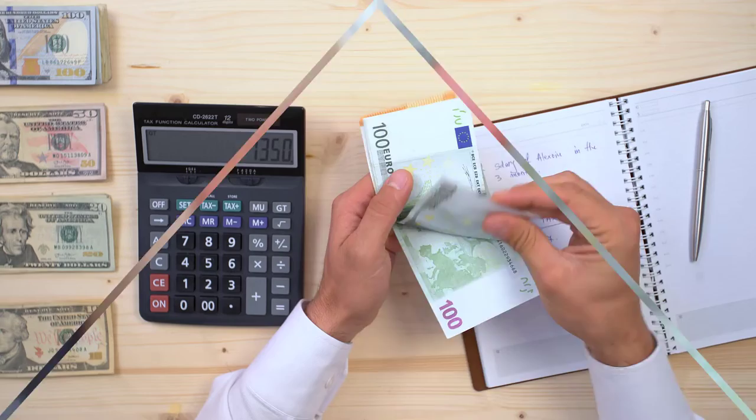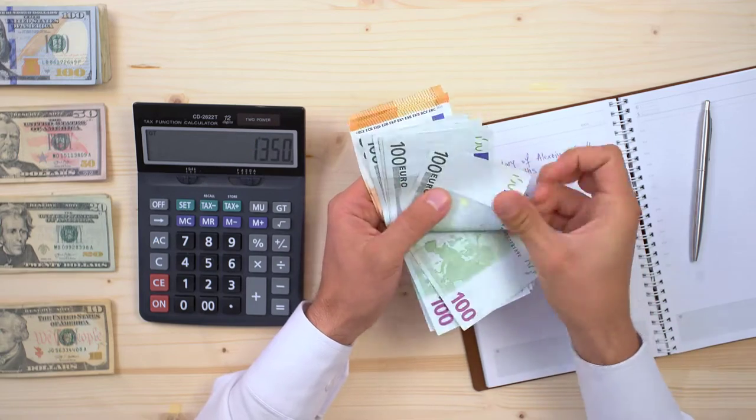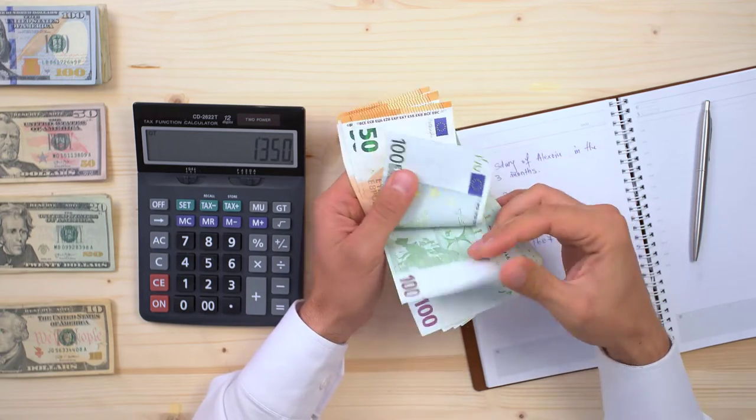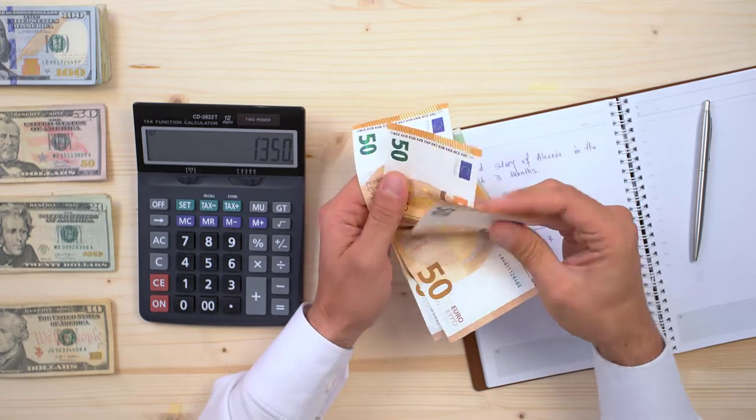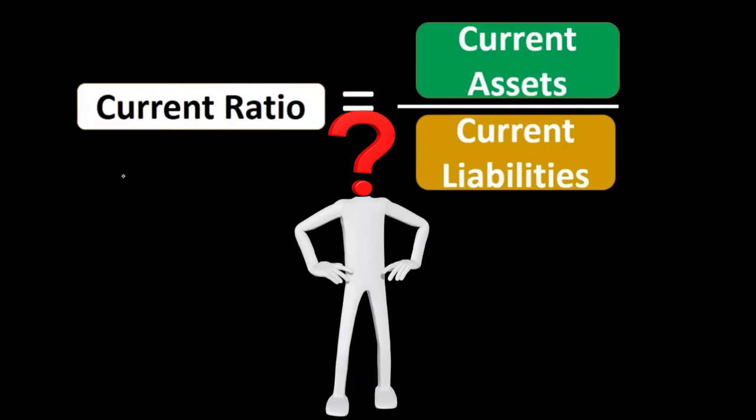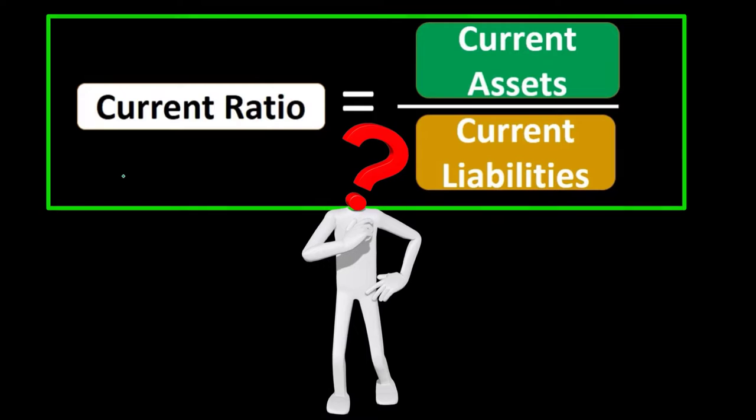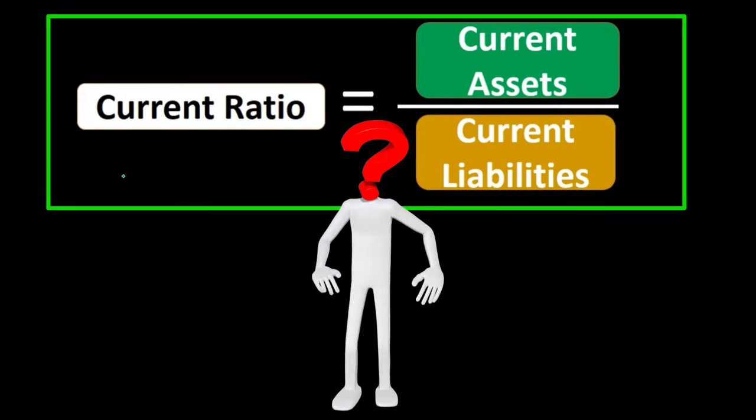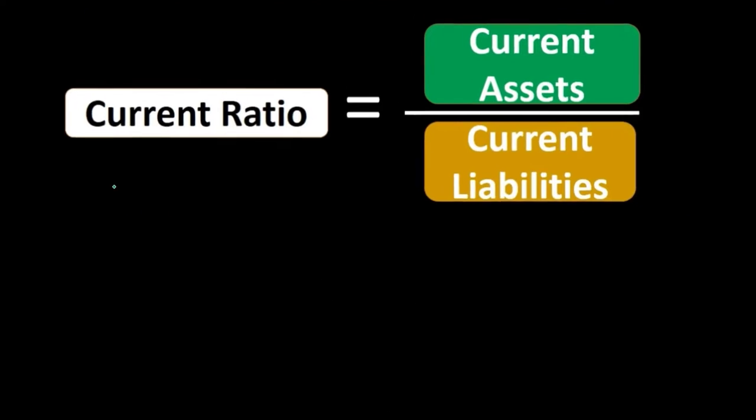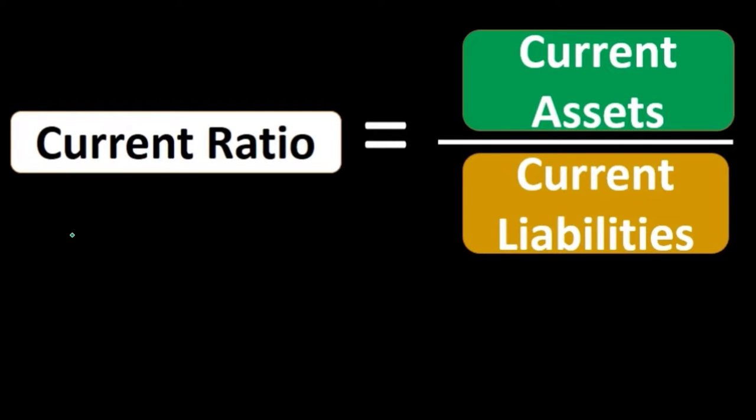A couple calculations that would be used to measure liquidity are the current ratio. That would be comparing the current assets to the current liabilities. Current liabilities are what we're going to owe within a year. That's an arbitrary time frame, a year, but it's a good time frame, a relatively short time frame as compared to current assets,